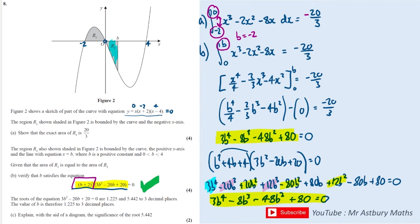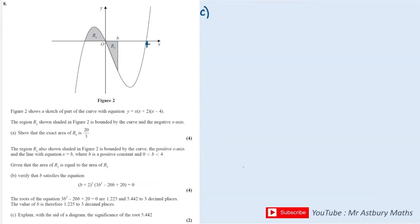On to part C. Part C is asking us to explain with the aid of a diagram the significance of this root, 5.442, when they've already told us that the value of the root here, b, is 1.225. Let's draw the graph, and let's just draw the positive part. So it comes in there, and then it goes up here like that. And we have here that this region is 20 over 3, but the value of it, when we integrate, is negative, because it's below the axis.